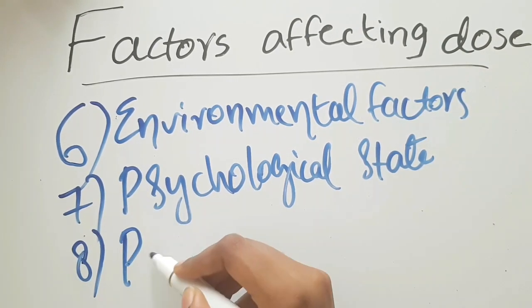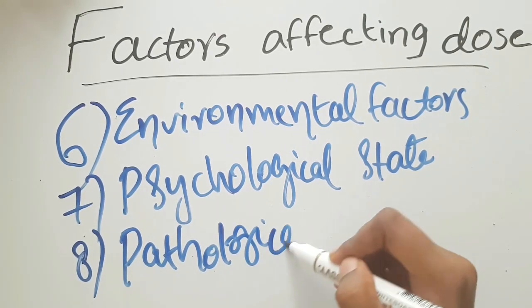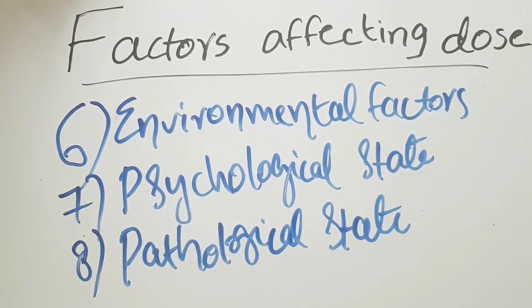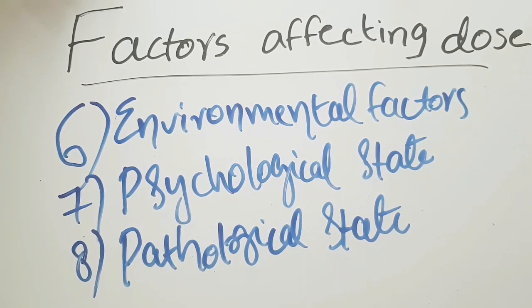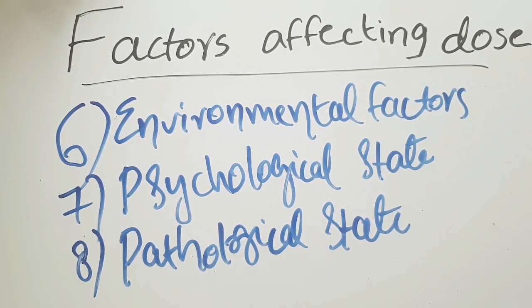Next, the eighth one: pathological state or the presence of disease. Several drugs, for example in gastrointestinal diseases like achlorhydria - that is reduced secretion of HCl or acid in the stomach - that will reduce the absorption of drugs like aspirin. In case of liver disease or kidney disease, dosage adjustment is a must because liver and kidney are the important organs responsible for drug metabolism and excretion. When there is failure of these organs, dosage adjustment is a required step in order to reduce toxicity.